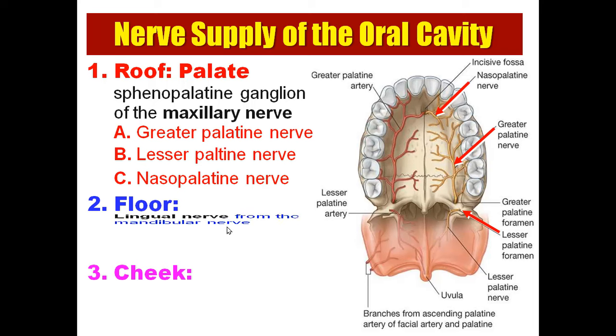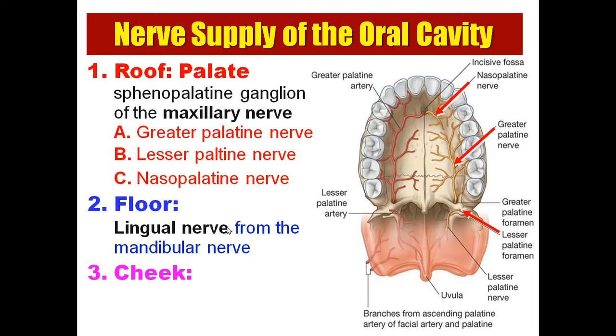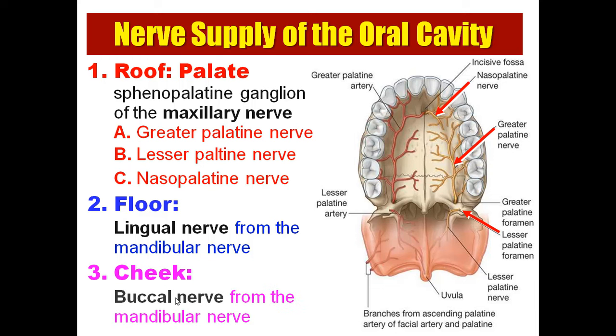Regarding the floor of the oral cavity, it is supplied by the lingual nerve from the mandibular nerve. Regarding the cheek, it is supplied by the buccal branch of the mandibular nerve.